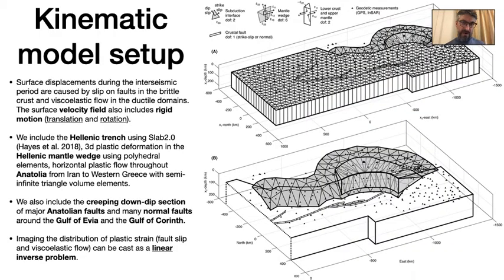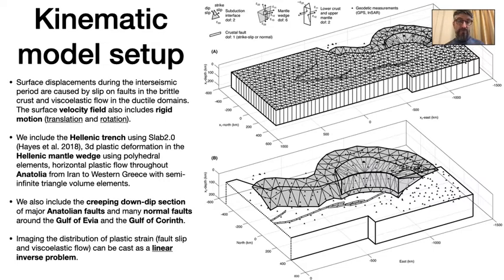We then build the kinematic model of the region that includes the key tectonic components. Surface displacements during the interseismic period are caused by slip on faults and viscoelastic flow in the ductile domain. The surface velocity field also includes a rigid body motion, which is a combination of overall translation and rotation relative to an arbitrary reference frame. The tectonic components include the Hellenic Trench modeled based on the Slab2 model, and volume elements in the mantle wedge to represent possible slab retreat.